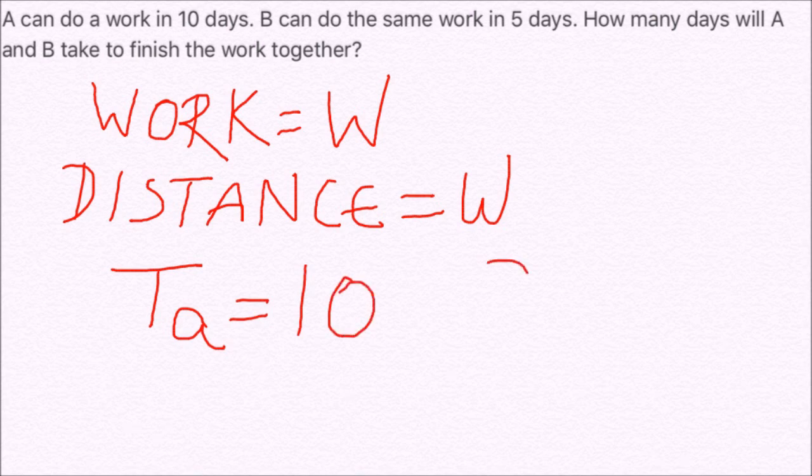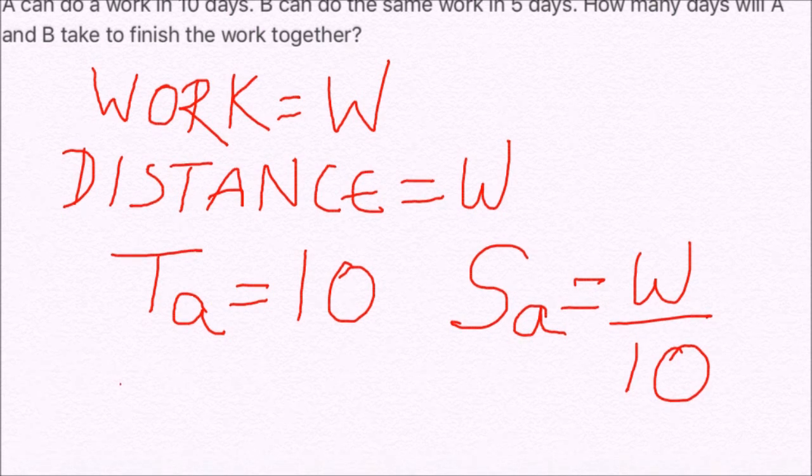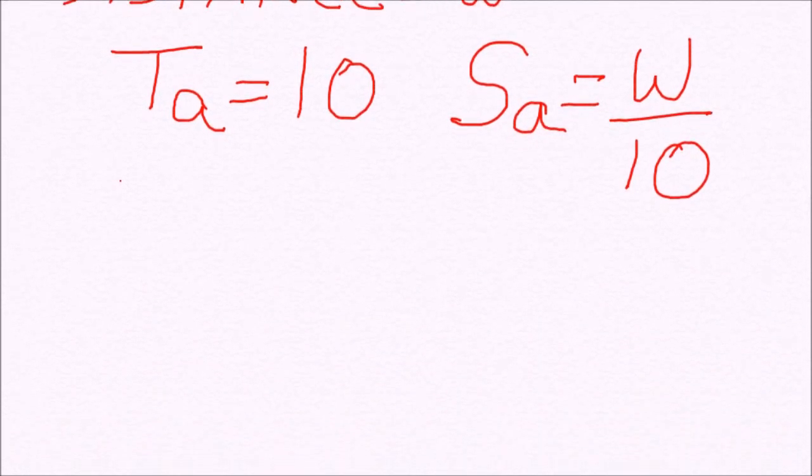The speed of A becomes distance upon time that is W by 10. Similarly, the time taken by B is 5 days.